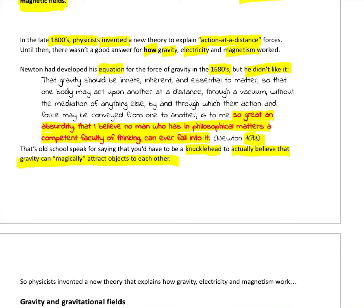So fast forward into the 1800s, physicists came up with a theory, a set of rules, a set of ideas which explain why these action at a distance - the big three: gravity, electricity and magnetism - they came up with a theory for why or how they work.